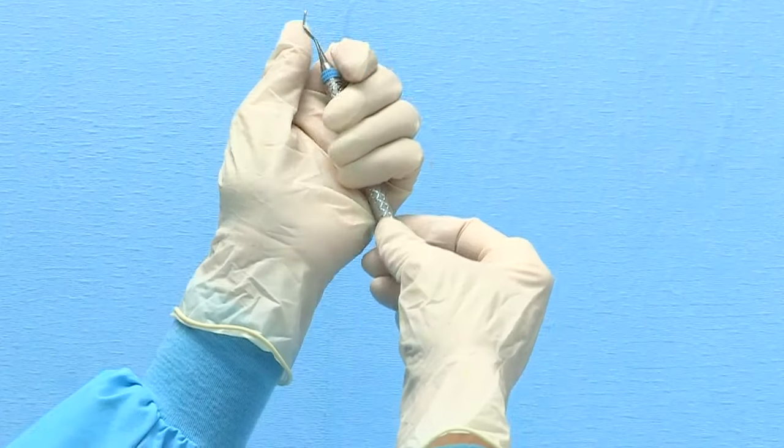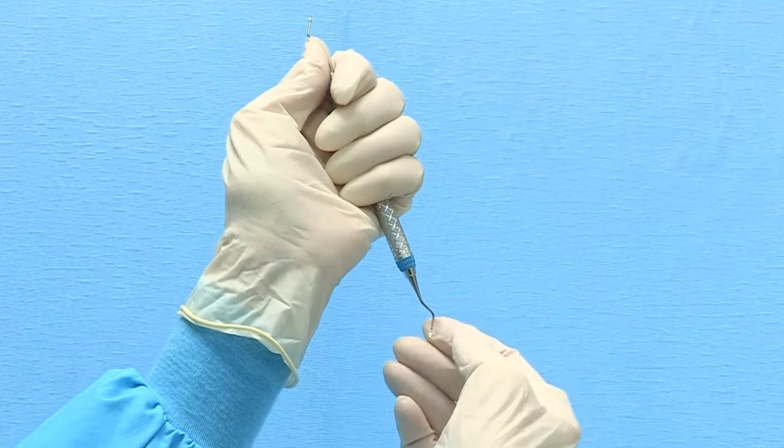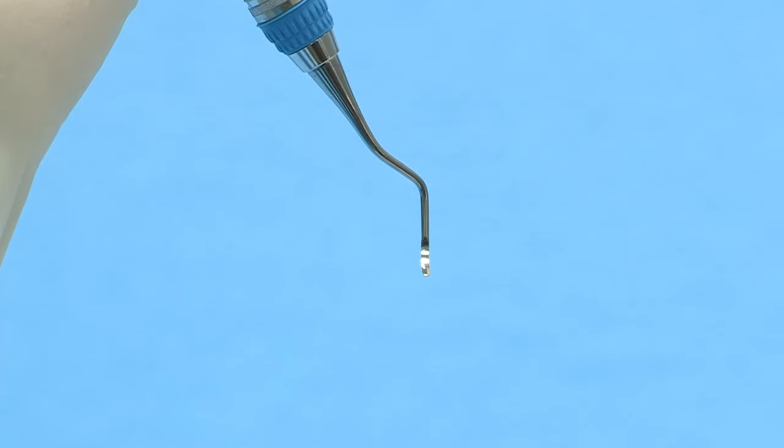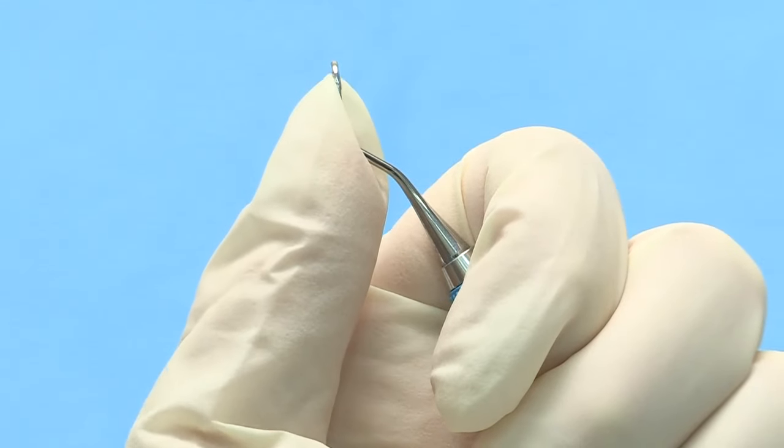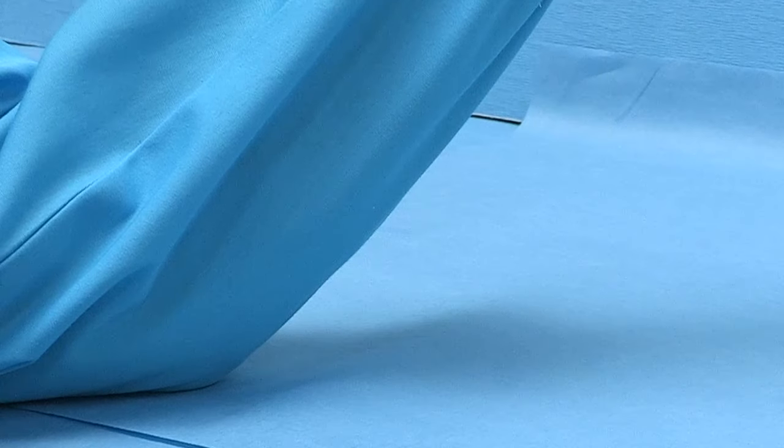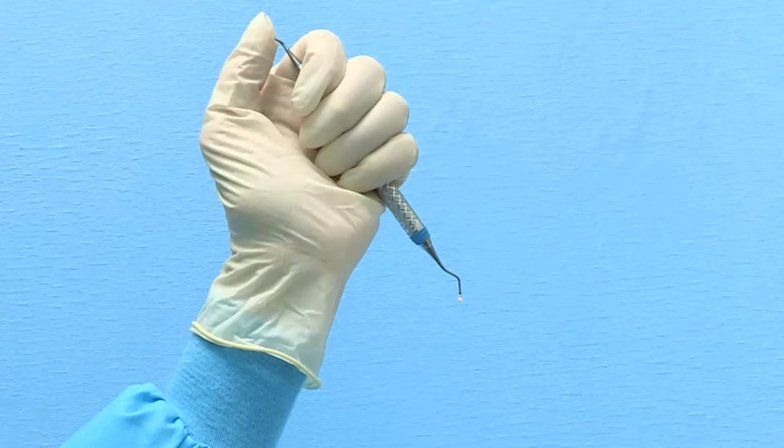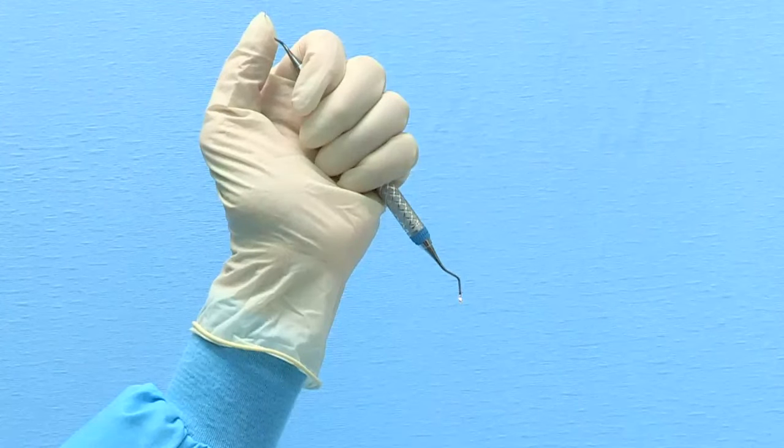To begin the sharpening process hold the Universal Curette vertically in your non-dominant hand. The blade to be sharpened will be at the bottom with the toe pointed toward you. Brace the top shank with your thumb and place your elbow directly in front of you on the table. This positioning is very important as it will counterbalance the pressure that will be applied when sharpening the lower blade.